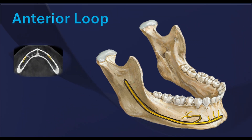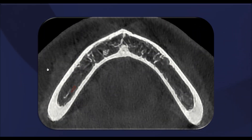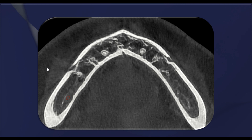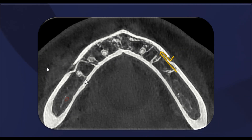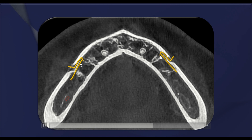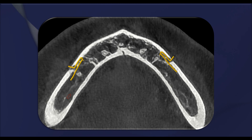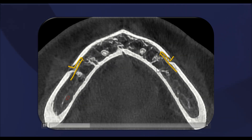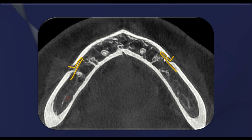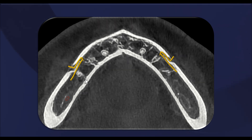In this CBCT axial section, we can see the anterior loop of the mental nerve. Instead of exiting directly, the nerve extends forward beyond the mental foramen, then curves back before making its actual exit. The axial section clearly shows this looping pattern, which is also visible on the left side.